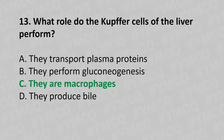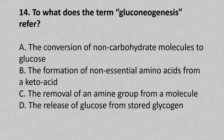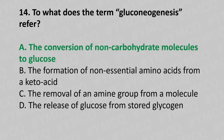Now let's move to question number 14. To what does the term gluconeogenesis refer? Option A: The conversion of non-carbohydrate molecules to glucose. Option B: The formation of non-essential amino acids from keto acid. Option C: The removal of an amine group from a molecule. Option D: The release of glucose from stored glycogen. And the answer is Option A: The conversion of non-carbohydrate molecules to glucose.